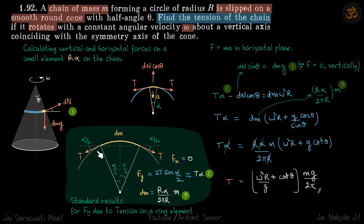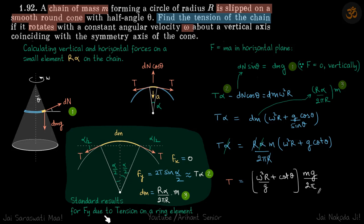So the force due to tension on a small part of a chain comes to be T·alpha. The mass of that small part dm is: this angle alpha upon total angle 2π, times total mass M — equivalently, the arc length r·alpha upon total perimeter 2π·r, times M. So that is how we calculate dm on this small element, and we will need it because we are going to calculate dm·g. This is the standard result for the force in the y-direction in this xy-plane due to tension on a ring element, and we are going to use that here.